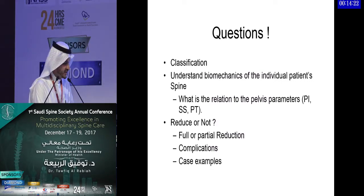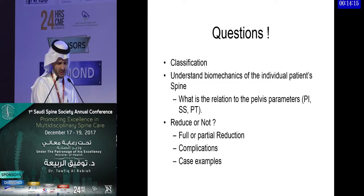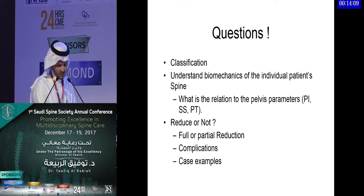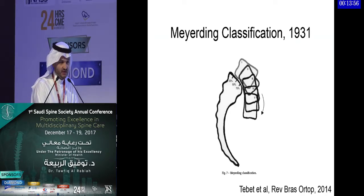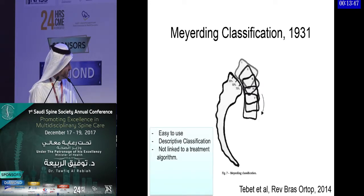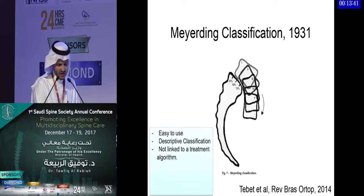I'm going to go over the classifications of high-grade L5-S1 spondylolisthesis, understand some of the biomechanics of the individual patient's spine, the relationship to pelvic parameters, and the golden question: whether to reduce or not to reduce. The classic way of classifying the degree of spondylolisthesis is the Meyerding classification. We're talking here of at least 50% or more. The problem with this classification is that, though it is easy to use and communicate with colleagues, it's purely descriptive and not linked to treatment algorithms.